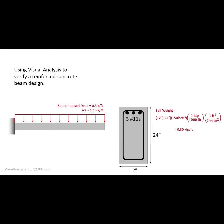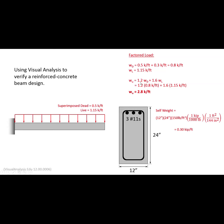Now that I've got the self-weight, I can figure out the factored load. For the dead load, I've got 0.5 kip per foot superimposed plus 0.3 kip per foot self-weight, giving a total of 0.8 kip per foot. The live load was given at 1.15 kip per foot. The dead load is less than eight times the live load, so the controlling load combination is 1.2 times dead plus 1.6 times live, which gives 2.8 kip per foot — exactly what we had in class.